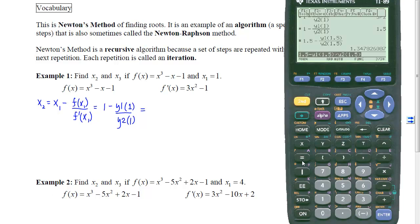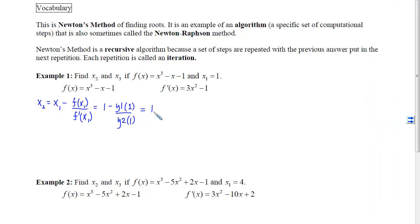So on our calculators now, we will type in 1 minus y1 of 1 divided by y2 of 1. And then to overwrite our calculator's desire to give us a fraction or an exact value, we're going to hit diamond, enter, and we'll get a 1.5. So we've just discovered that x sub 2 is 1.5.